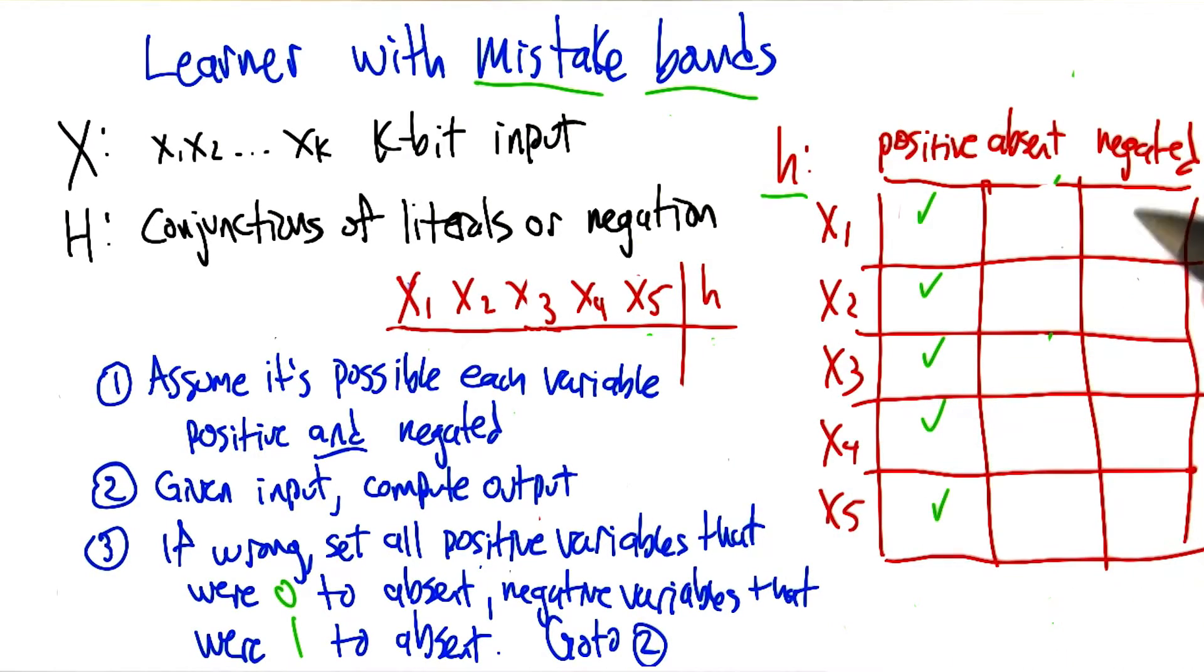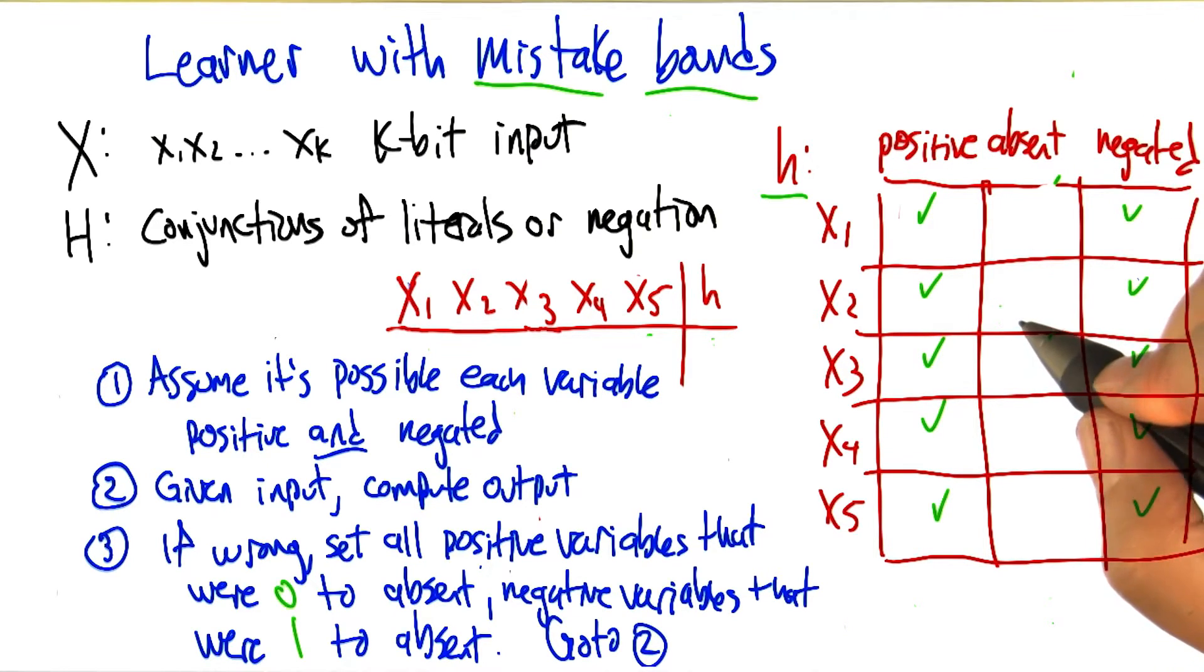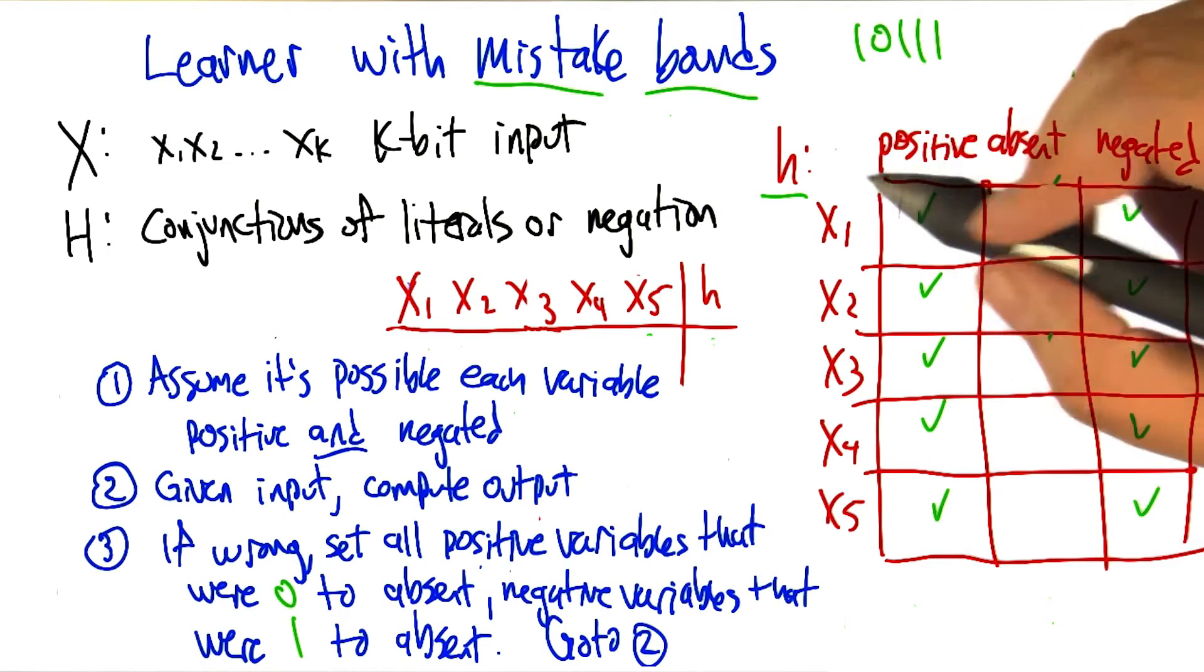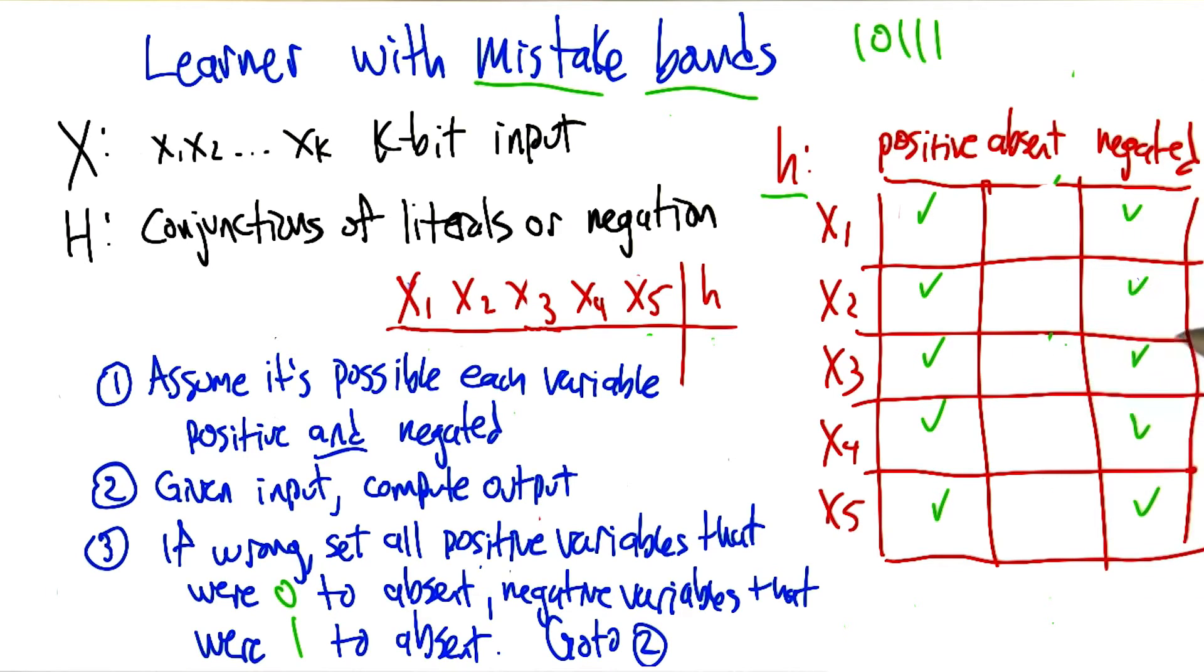It starts off in this weird state where it imagines that in the formula, every variable is present and in both its positive and negated form, which is kind of weird. And so what that would mean is the formula is X1 and not X1, X2 and not X2, X3 and not X3, X4 and not X4, X5 and not X5.